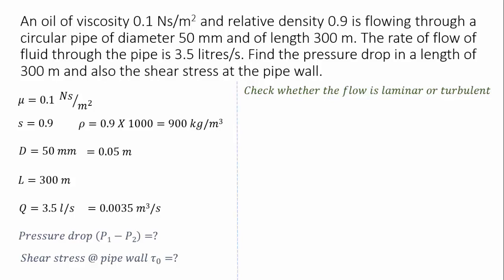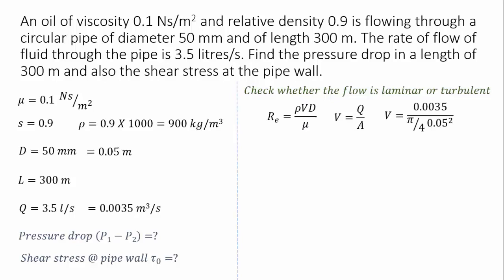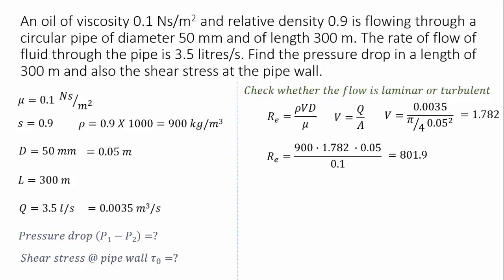First, let us check whether the flow is laminar or turbulent using Reynolds number. Reynolds number equals ρVD/μ. ρ is 900 kg/m³. We don't know the velocity directly, but we have the discharge Q. Using Q = Av, velocity V = Q/A = 1.782 m/s. Substituting: ρ = 900, V = 1.782, D = 0.05 m, μ = 0.1 N·s/m², we get Reynolds number ≈ 801.9. Since Reynolds number is less than 2000, the flow is laminar.